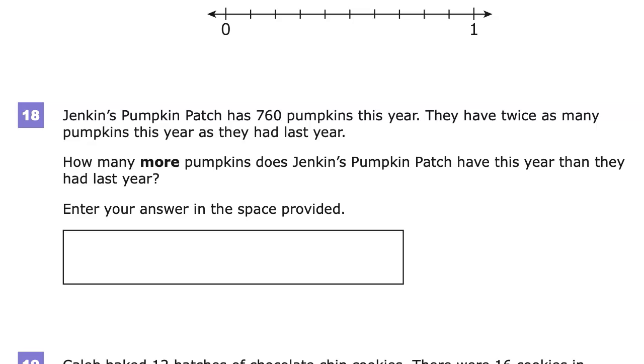Jenkins Pumpkin Patch has 760 pumpkins this year. That's twice as many pumpkins this year as they had last year. So twice as many this year. That matters. Time matters in this one.